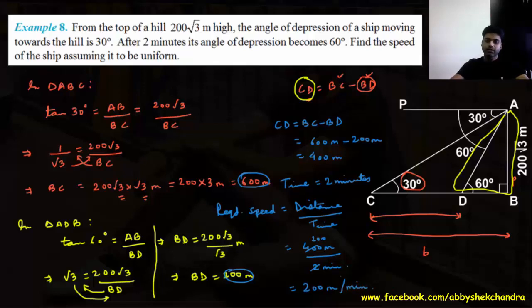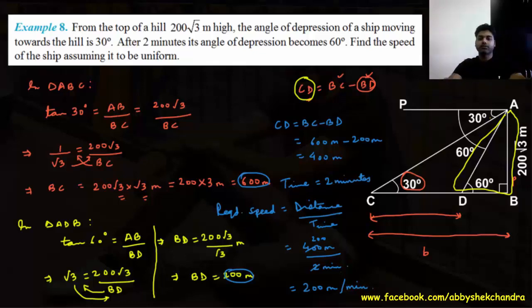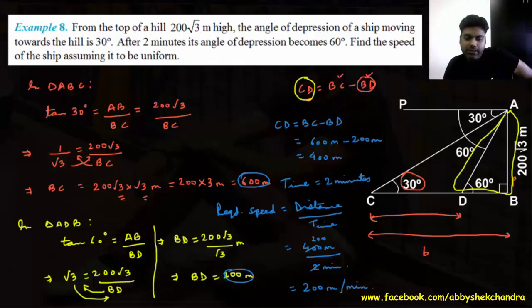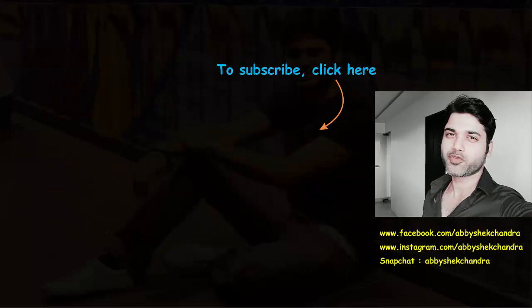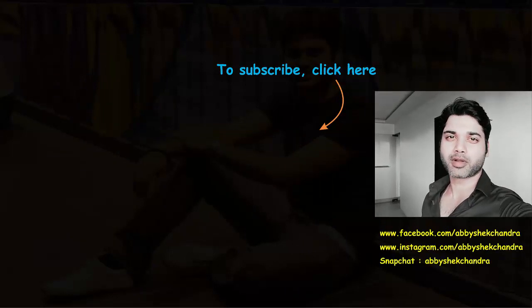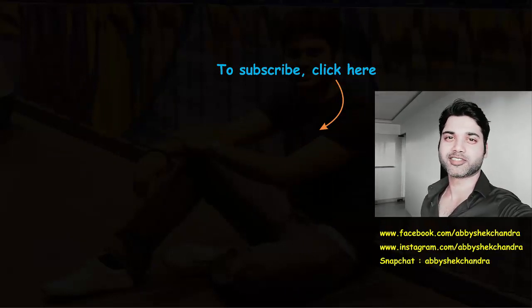Speed equals distance by time equals 400 meters by 2 minutes equals 200 meters per minute. You may also change the time to seconds to get the answer in meters per second. This is it for today's lecture. In the next lecture, we are going to discuss more questions. If you like what you saw, don't forget to hit the subscribe button. This is Abhishek Chandra signing off — take care.